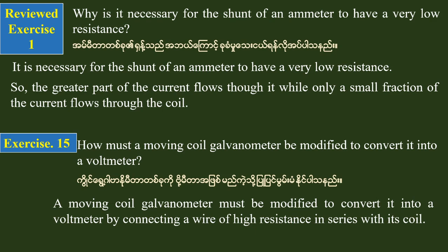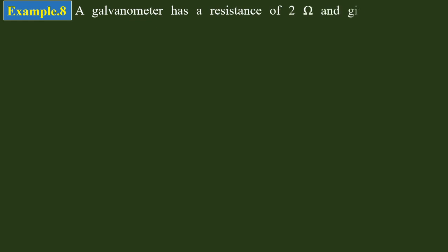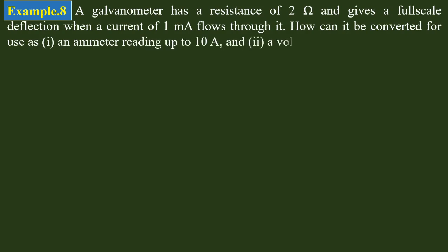The galvanometer has a resistance of 2 ohms and gives a full-scale deflection when a current of 1 mA flows through it.